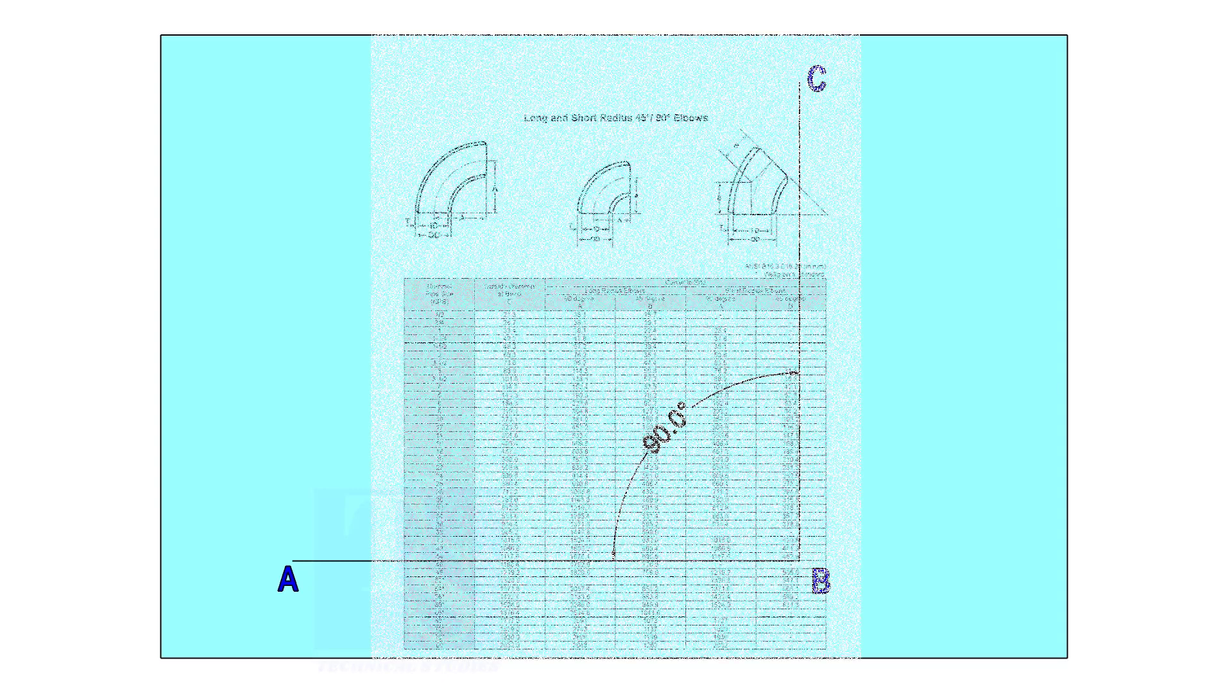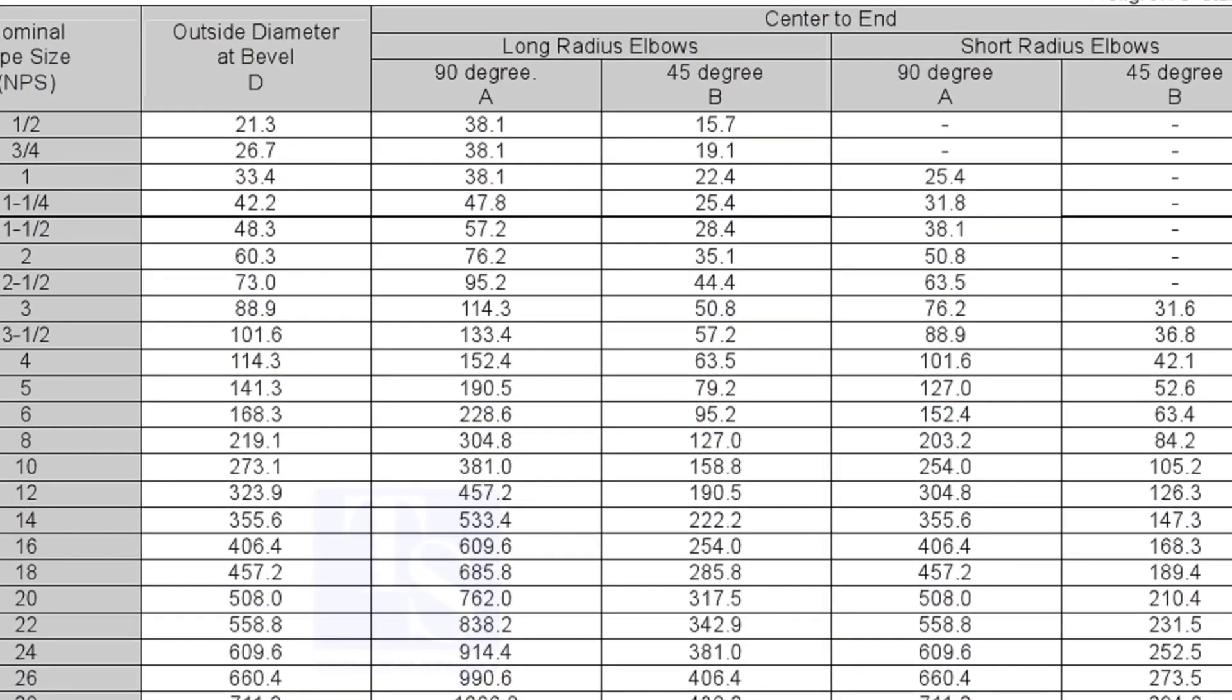Let us mark a 25-degree elbow on a 16-inch large radius elbow. Mark line AB and a perpendicular line BC. Let us check the center radius of 16-inch long radius elbow.